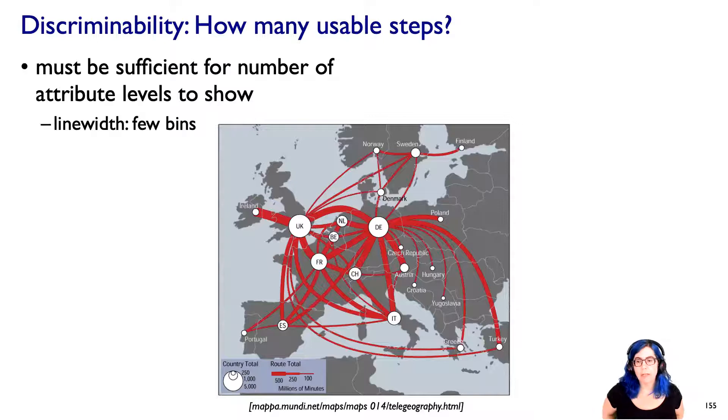So another thing we can think about is how many usable steps are there in a channel? So we have to match that with the number of attribute levels that we want to show, right? Here's an example with line width. And the thing that's interesting about line width is you can't make a line arbitrarily fat because at some point it won't seem like a line anymore. It'll seem much more like an area, right? So there's some limits on the number of levels that you could encode with line width. That's not saying line width is bad. It's not saying we always want the max number of levels. We're saying we have to make sure it's a match. If you have a relatively small number of levels in your categorical attribute, then line width might be completely reasonable, as we see here in this map showing telecommunications traffic between different European countries.